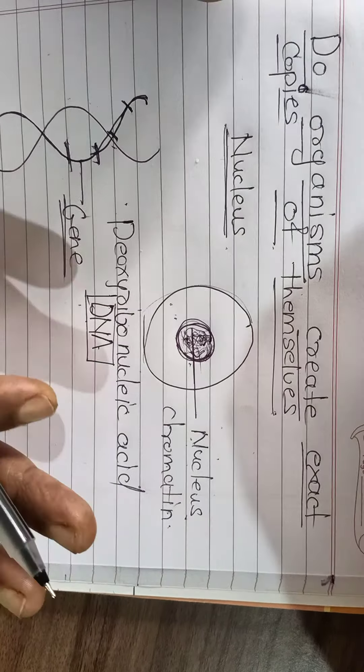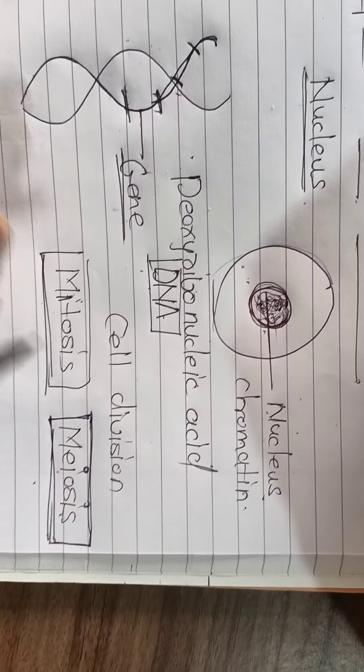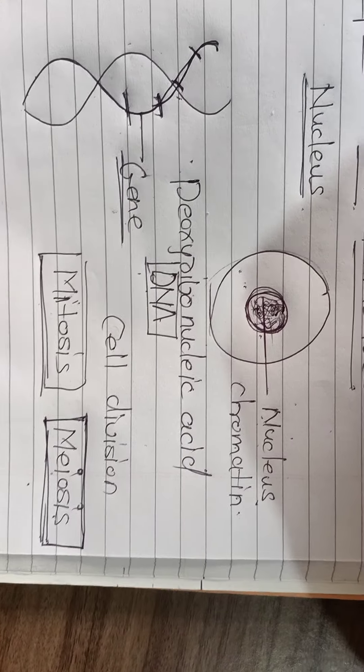This we will see in the chapter on heredity and evolution, but it is important to know now because we are discussing whether organisms create exact copies of themselves. Information is carried from parents to the next generation in the form of genes. A cell contains a nucleus, the nucleus contains chromatin material, which acquires the shape of a chromosome during cell division. The chromosome is made up completely of DNA molecules, and the segment of DNA that carries information from one generation to the next is called a gene.